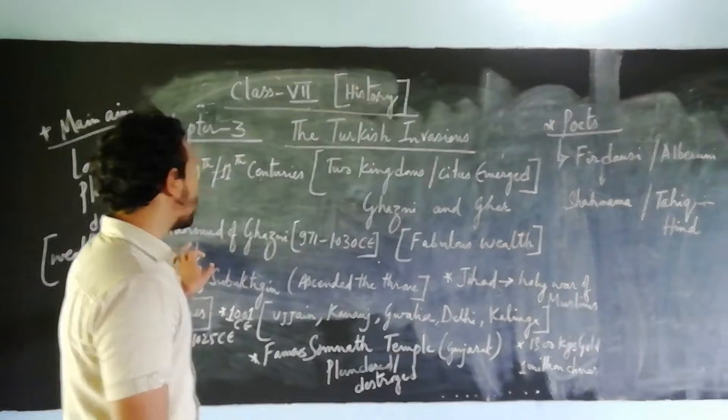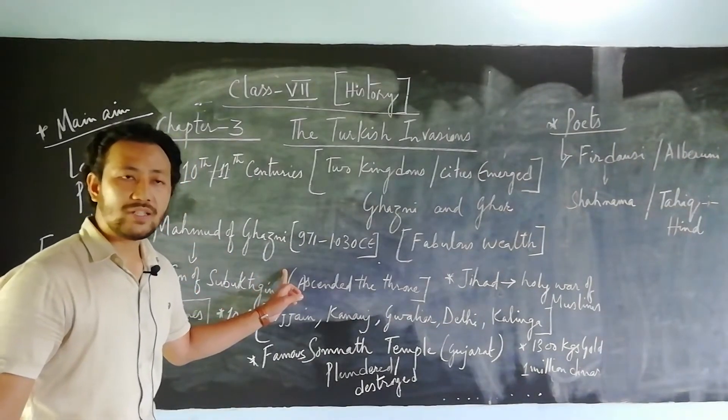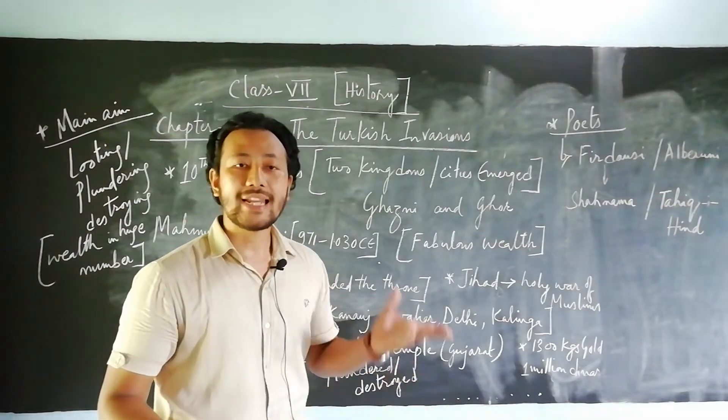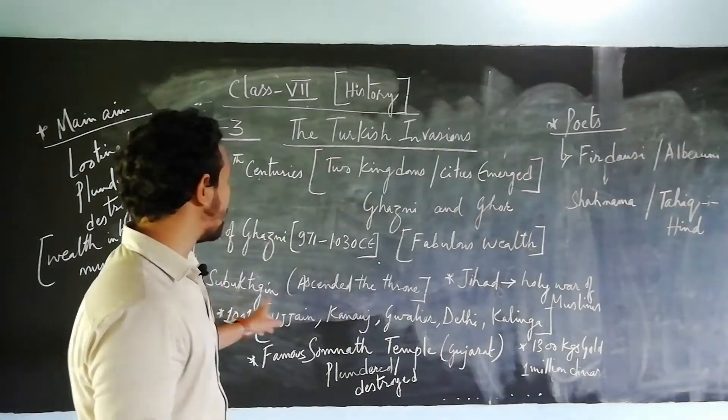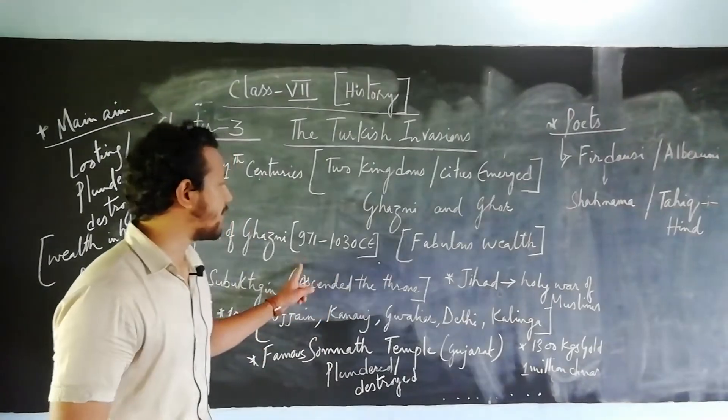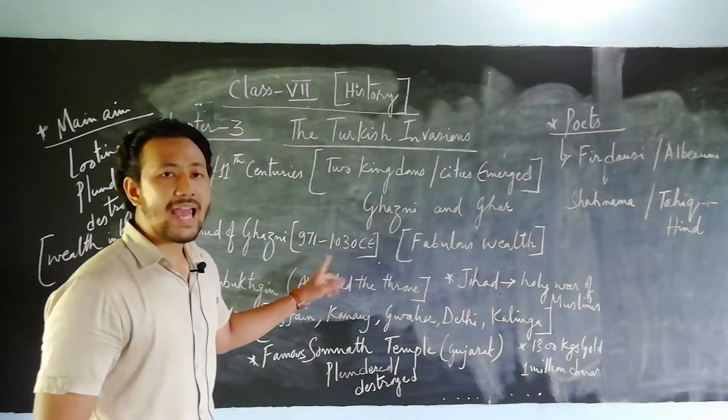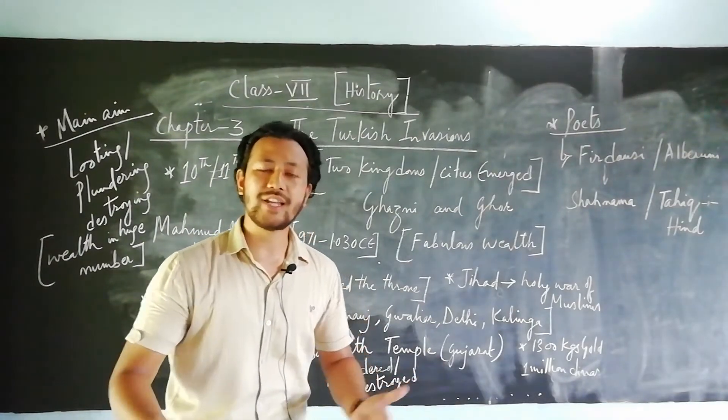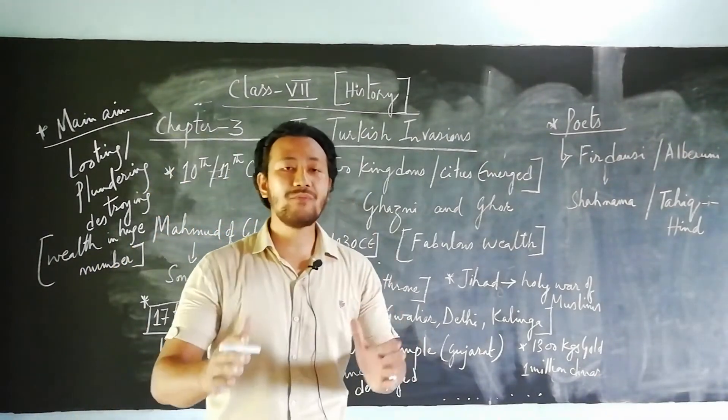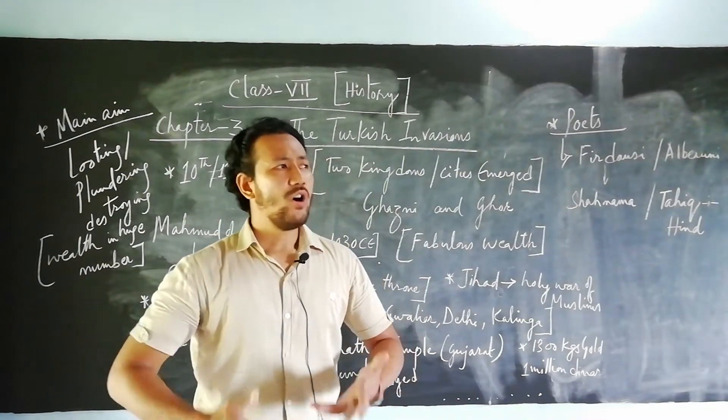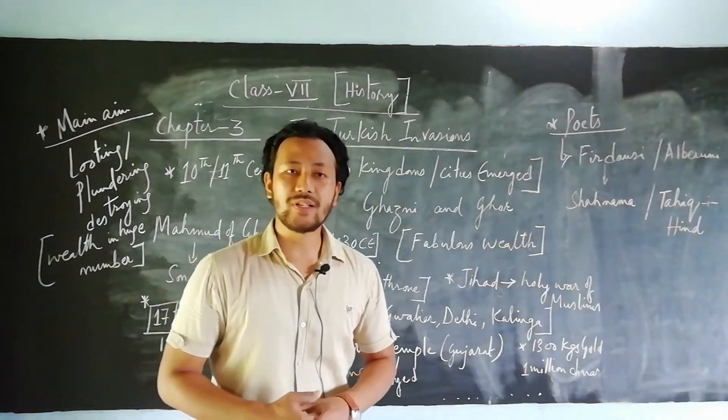Mohammed of Ghazni was one of the great rulers of the Arabian nation and he was the son of Subutigin. Mohammed of Ghazni ascended the throne in the year 971 CE and he started invading Asia by plundering, looting, and taking lots of wealth. That was the main aim of Mohammed of Ghazni.